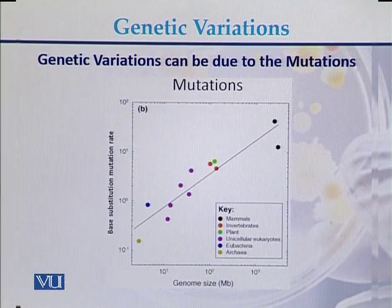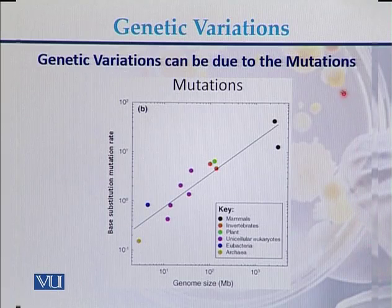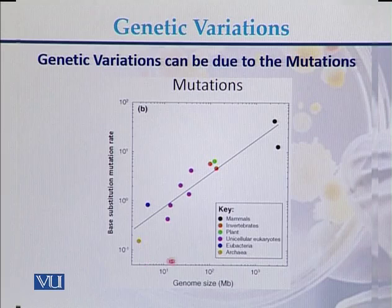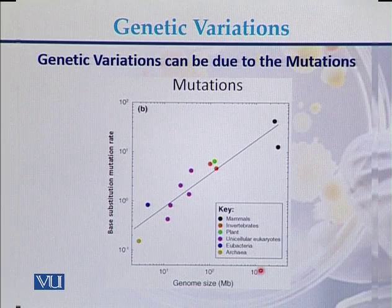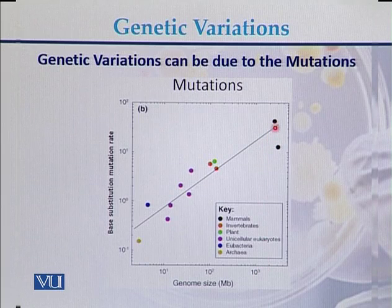The first reason is that genetic variation can be due to mutations. Mutation is a phenomenon that usually occurs in genomes. Here we can see that the mutation rate is higher in case of mammals, and the genome of mammals is also large in size.